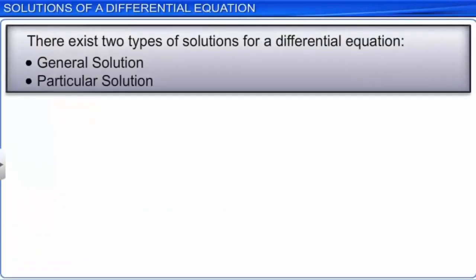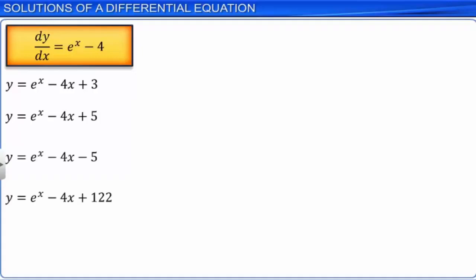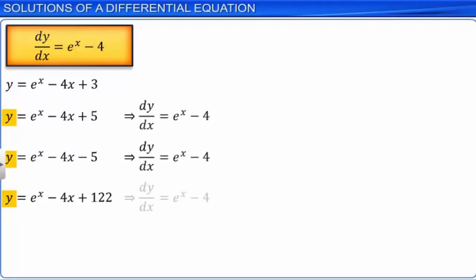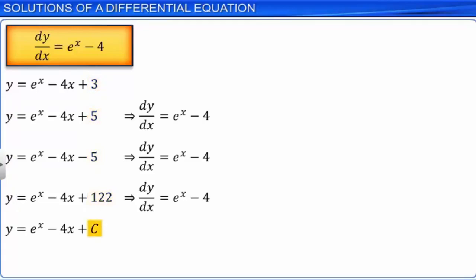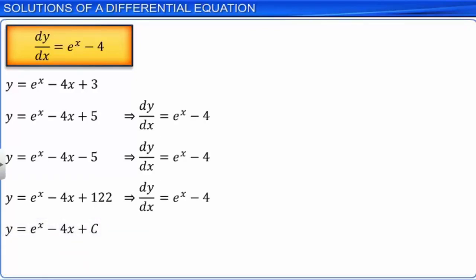There exist two types of solutions of a differential equation: a general solution and a particular solution. Each of the three forms of the function y considered here has the same derivative and therefore each is a solution. We can represent the arbitrary constant with a letter c, so this function represents all solutions of the differential equation. Such a function is called the general solution. The function obtained by replacing the value of c by a specific number is called the particular solution.